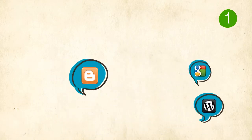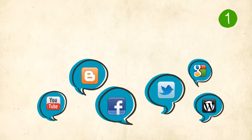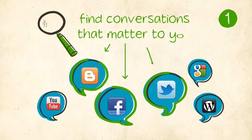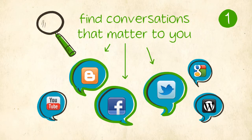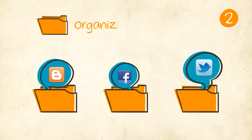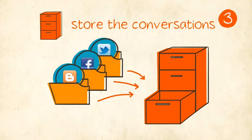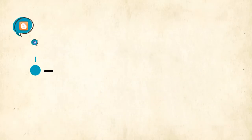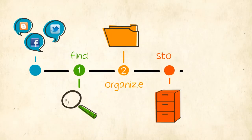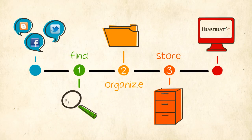Heartbeat works in three simple steps. First, you need to find the conversations that matter to you. Second, you need to organize them. And third, you need to store them so that you can see your results. This is the basic process that Heartbeat operates under. Now, let's look at the terminology we use to describe these tasks.